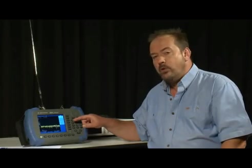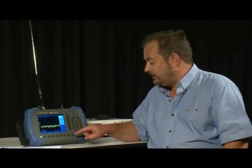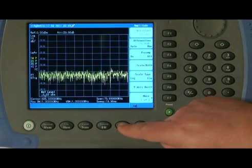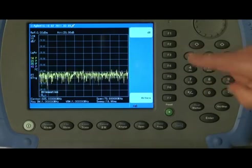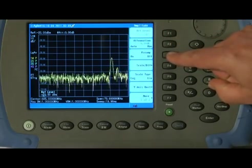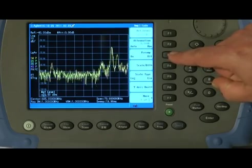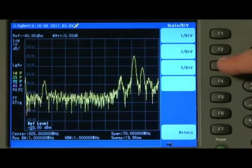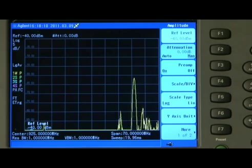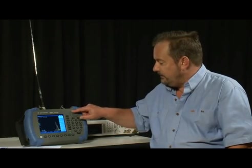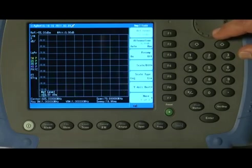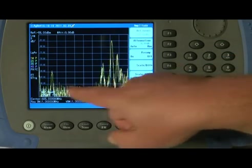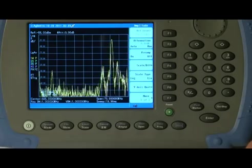And the next stage is very important. We need to make the analyzer as sensitive as possible. So, we are going to press the Amplitude button, and we are going to set the attenuation to 0 dB. We are going to turn the pre-amplifier on, and we are going to set the scale per division to 5 dB per division. I can now adjust the reference level to bring the signal up onto the screen. And you can see here, we have got a number of transmitters turning on and off.